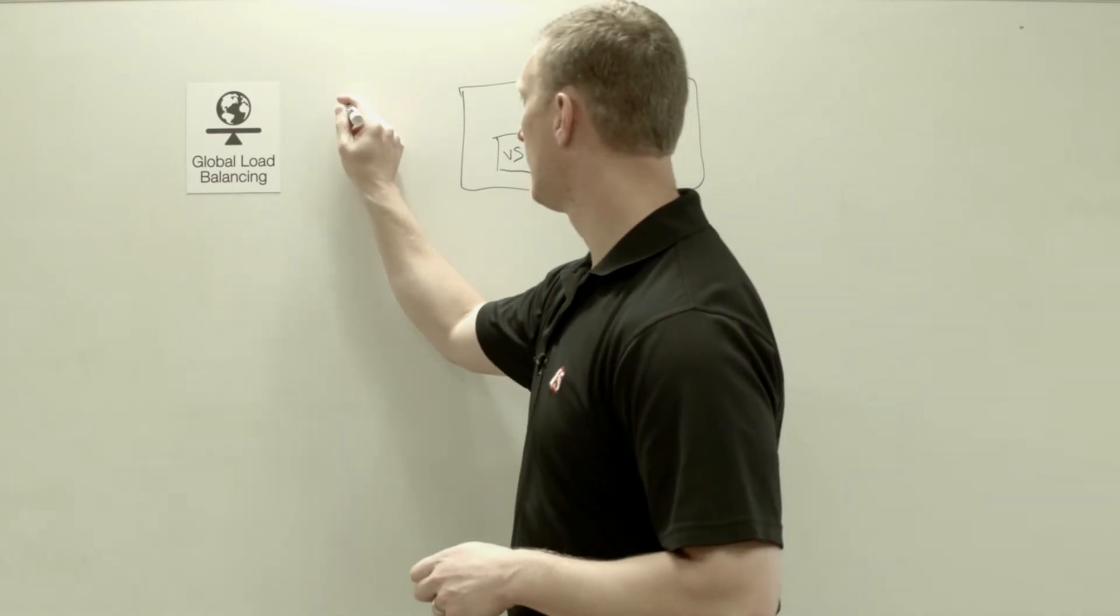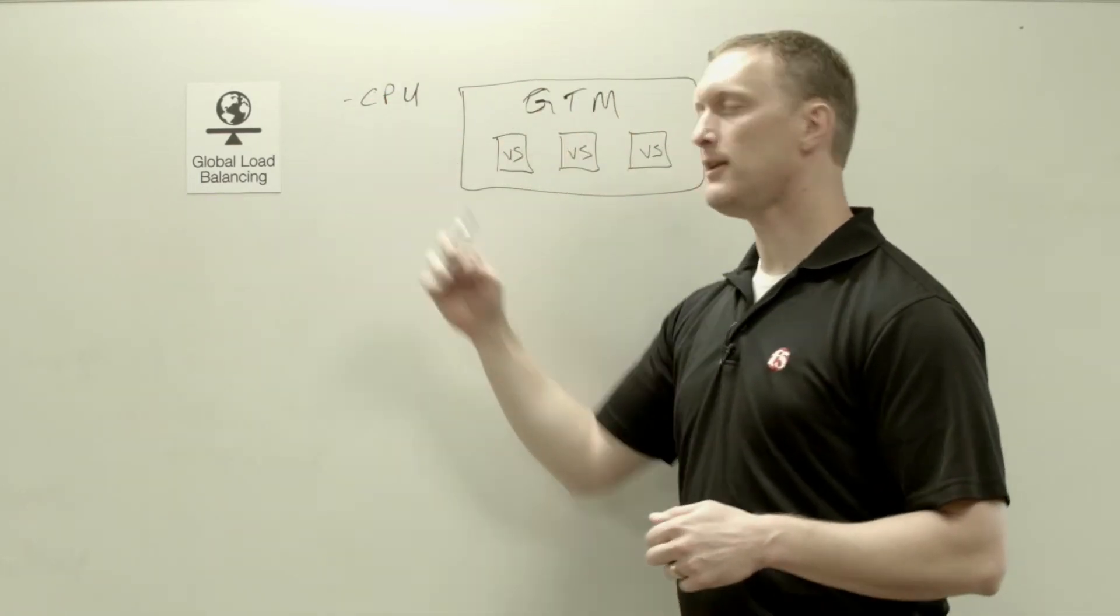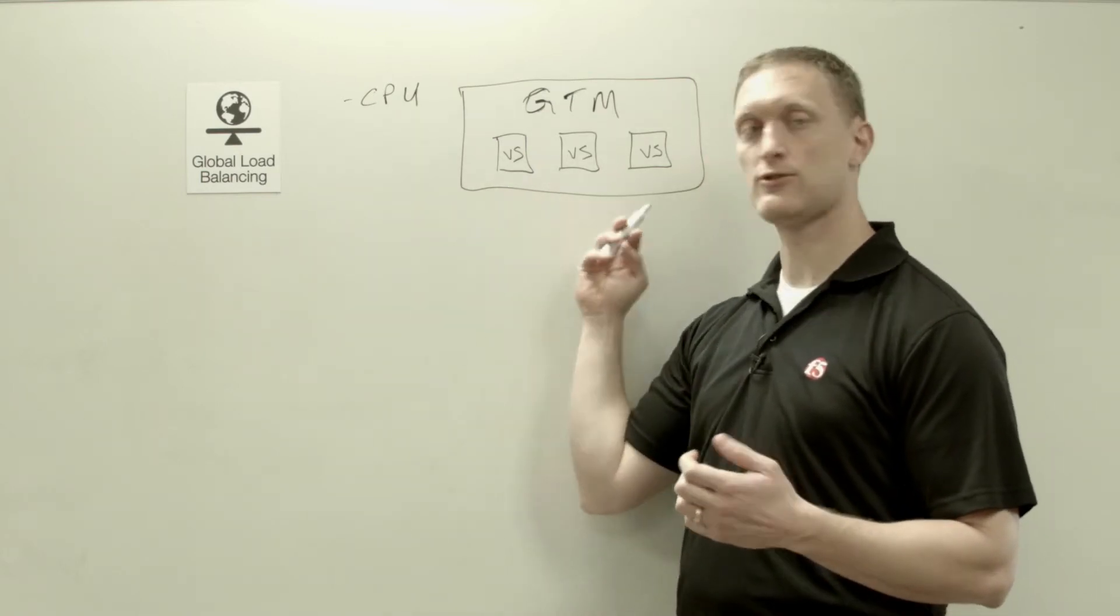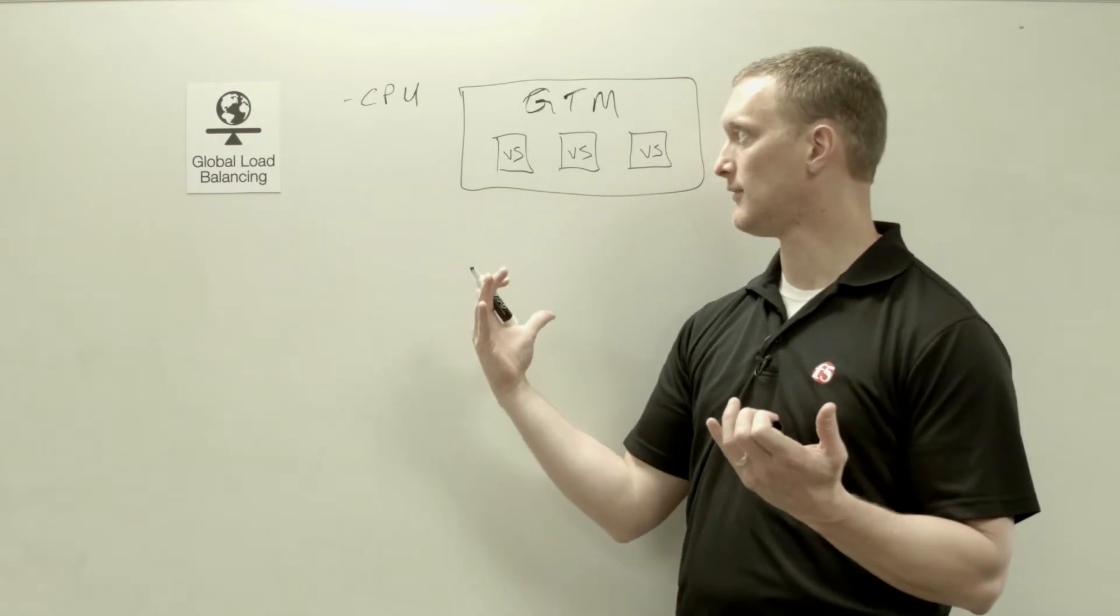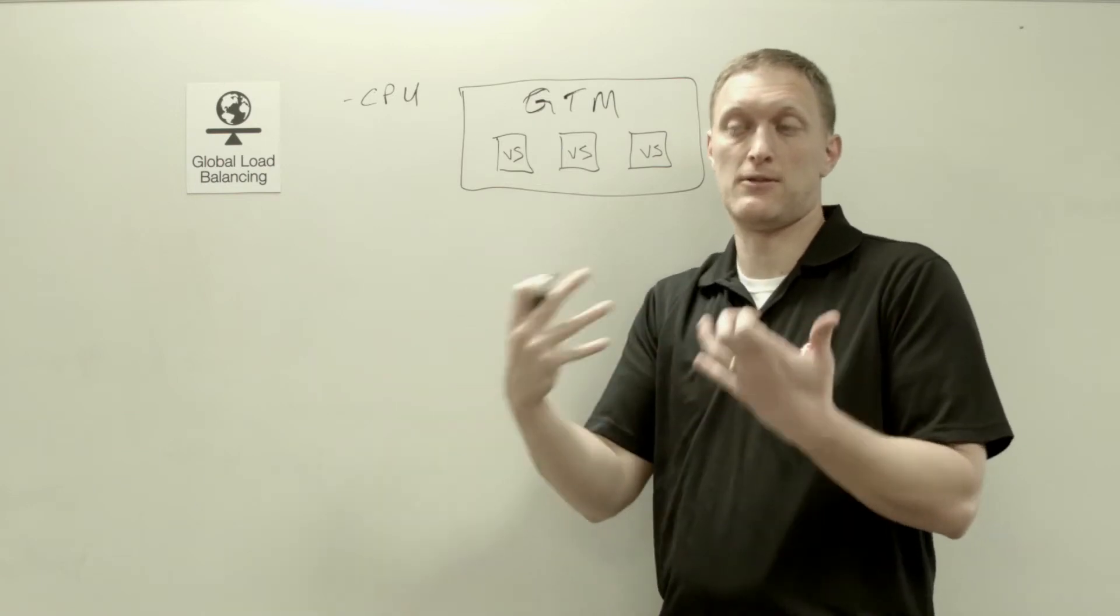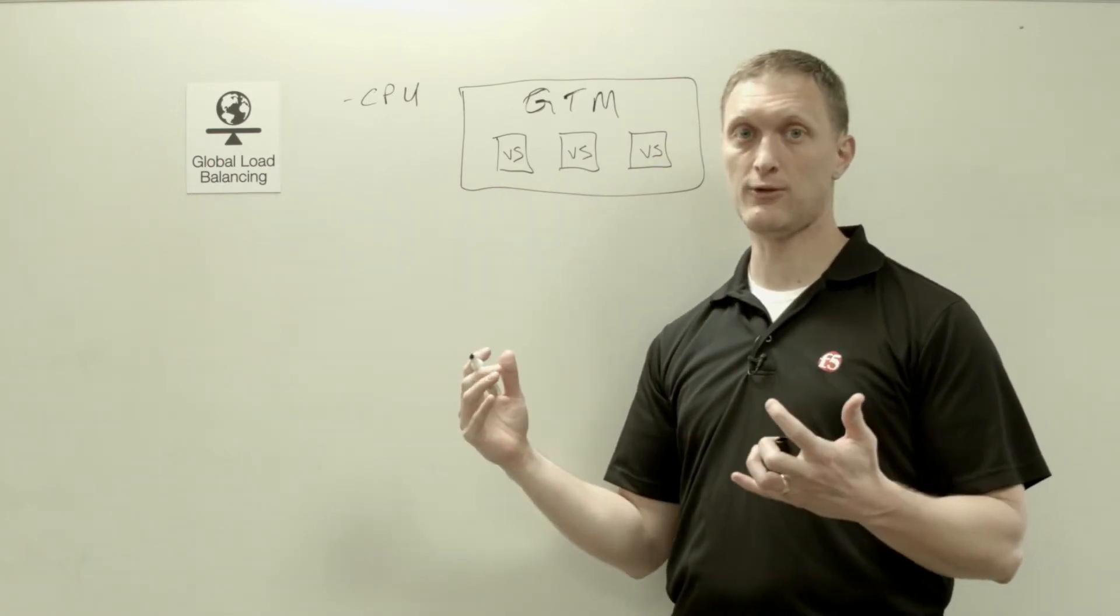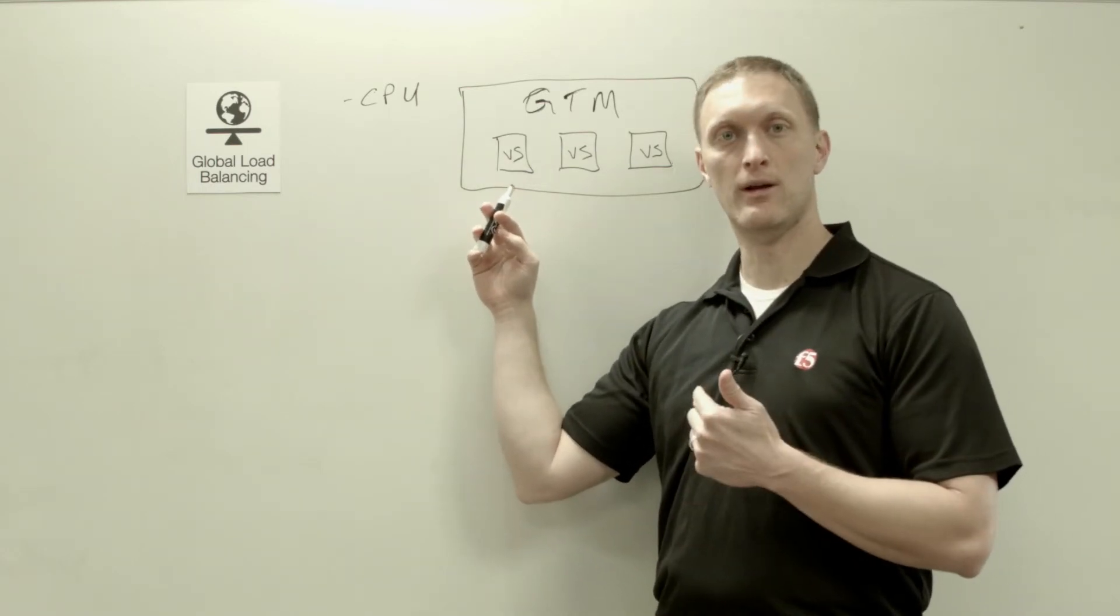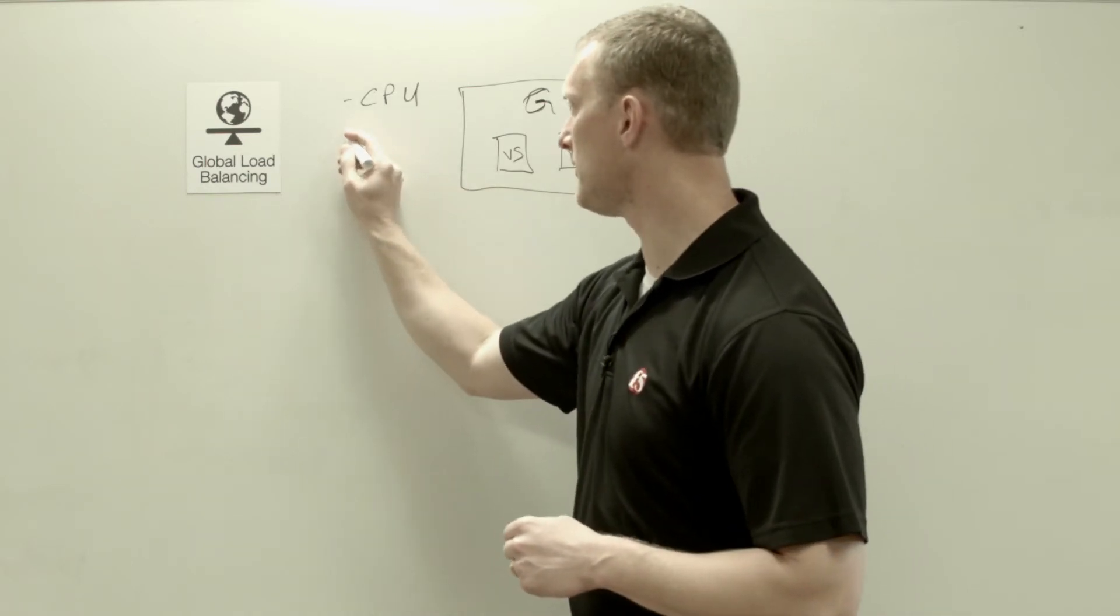So the first one that we're going to talk about is CPU. And CPU essentially selects the virtual server with the most available CPU capacity at that point. So whichever CPU has the most availability, then that virtual server gets selected. So it's pretty straightforward. But again, you can see why the GTM is going to need to know the status of each virtual server. All right, so that's the CPU one.